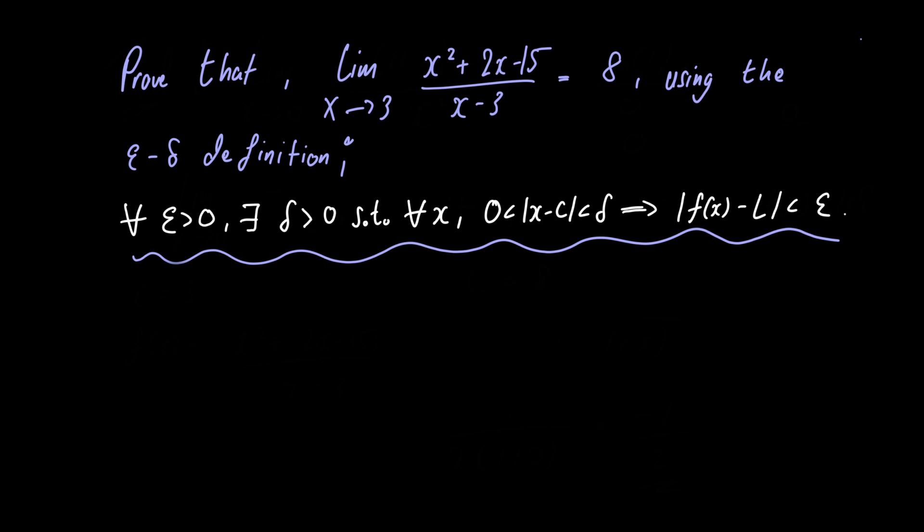We begin by letting epsilon be greater than 0. We choose delta to be equal to some value which we shall specify later.